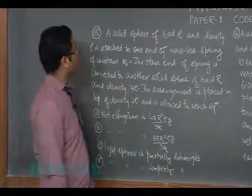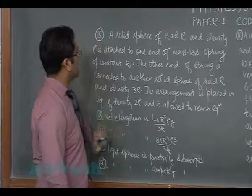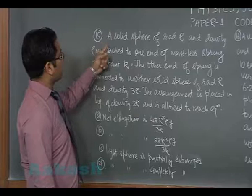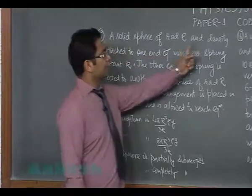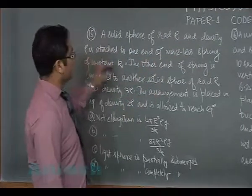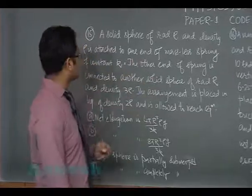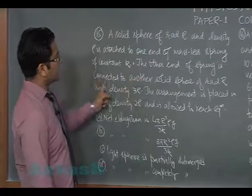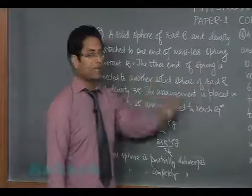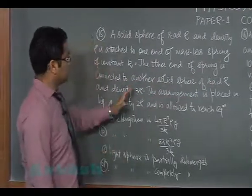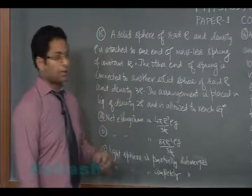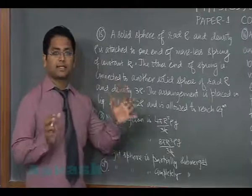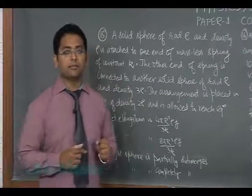All right, now let's continue. Question number 15, properties of bulk matter, hydrostatics. A solid sphere of radius R and density ρ is attached to one end of a massless spring of constant K. The other end is connected to another solid sphere of same radius but density 3ρ, and the whole arrangement is placed inside a liquid of density 2ρ and the system is allowed to reach equilibrium.